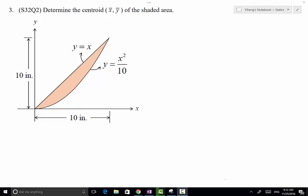In this problem we are given this shaded area and we need to determine its centroid location. This area is defined by two equations. One is a straight line y equals x, that's this 45 degree line, and the other one is a curve y equals x squared over 10.